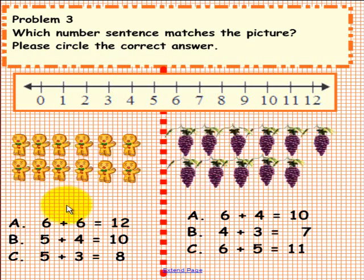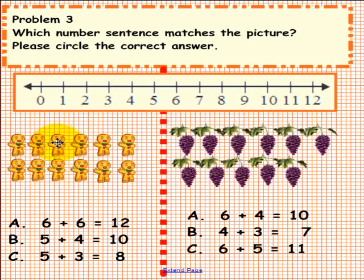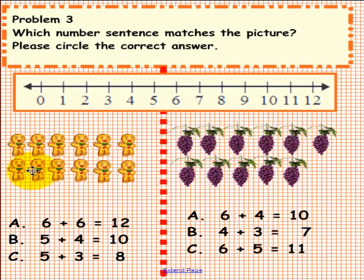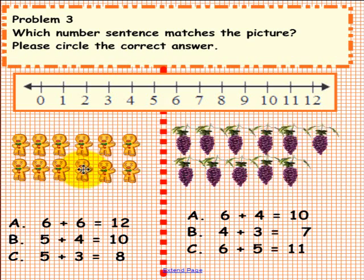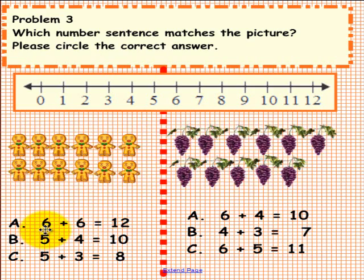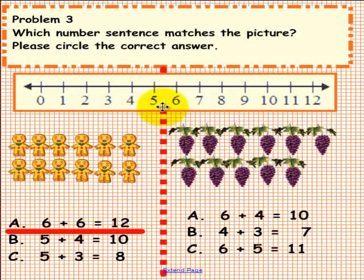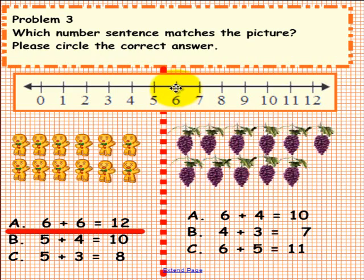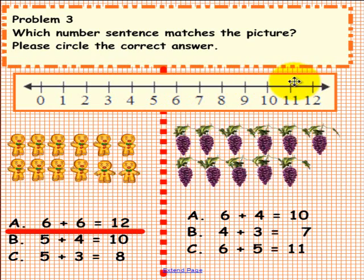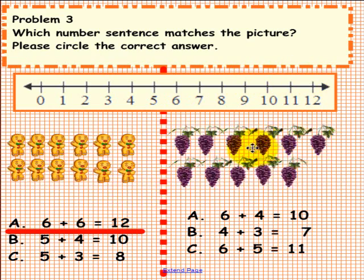On the left we have 1, 2, 3, 4, 5, 6 plus 1, 2, 3, 4, 5, 6. So our answer should be 12. Let's look at the number line. Here is 6, and we are going to jump 1, 2, 3, 4, 5, 6. So the answer is 12.